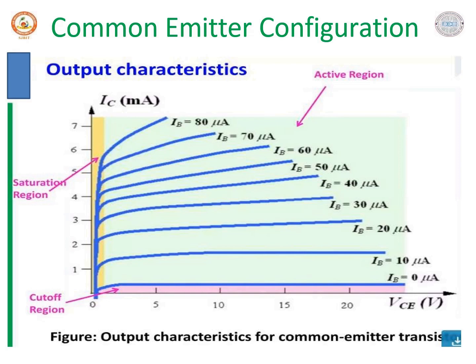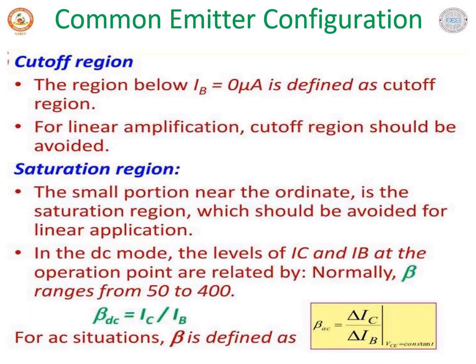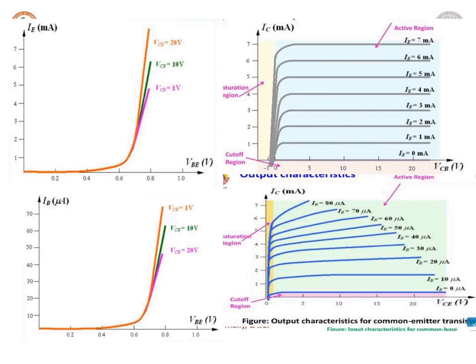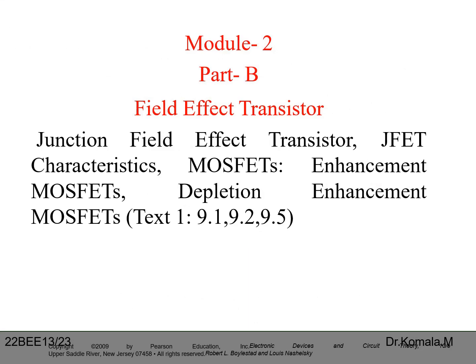If the transistor is in the cutoff or saturation region, it acts as a switch. Regarding the relationship between DC current gains, we derive that alpha = beta / (1 + beta), and beta = alpha / (1 - alpha).